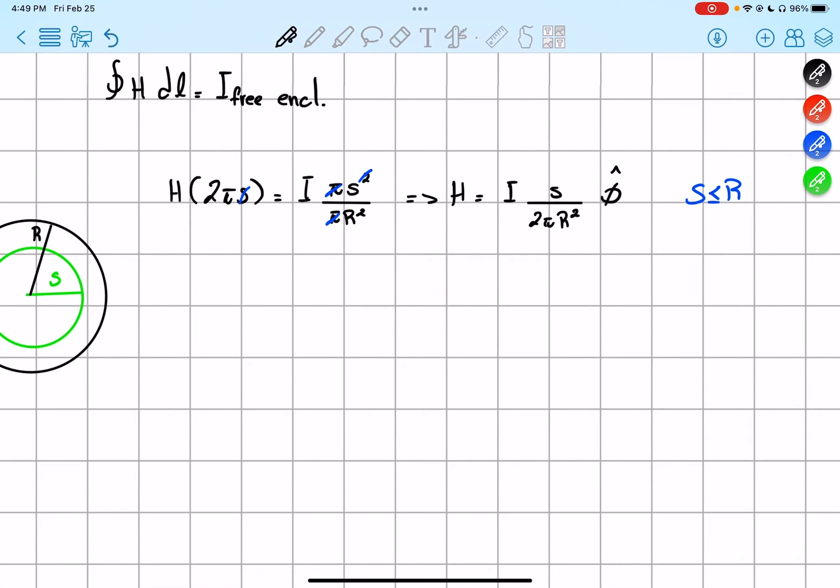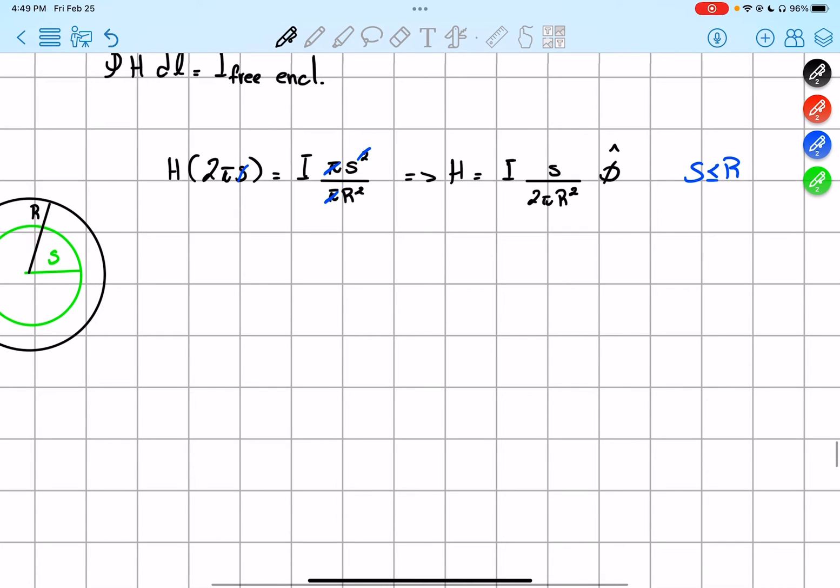Now, what if we're outside the wire? Well, if we're outside the wire, then our formula would turn like this, so 2π s, then the charge enclosed is gonna be equal to i, then π s squared.